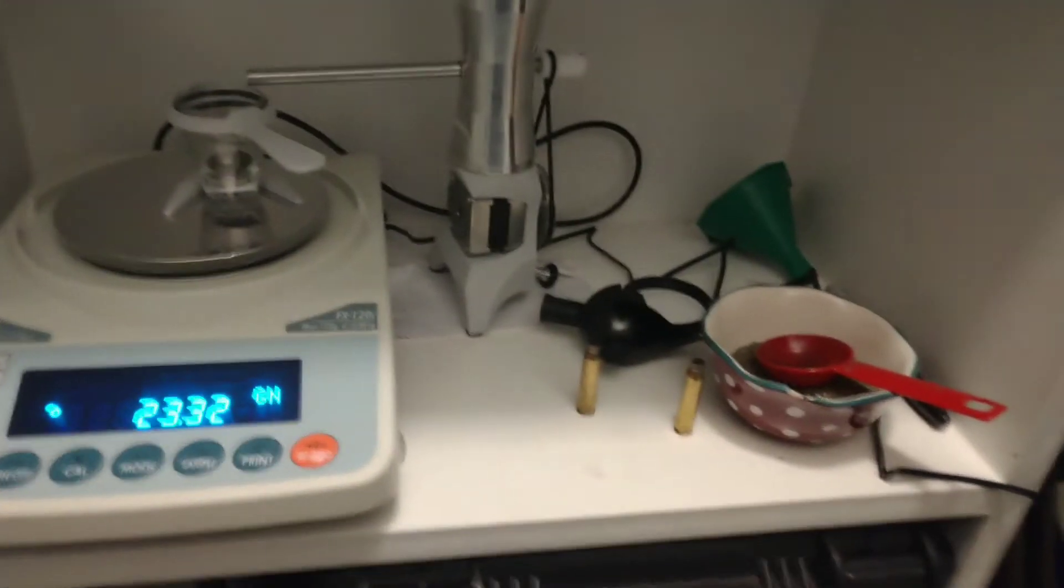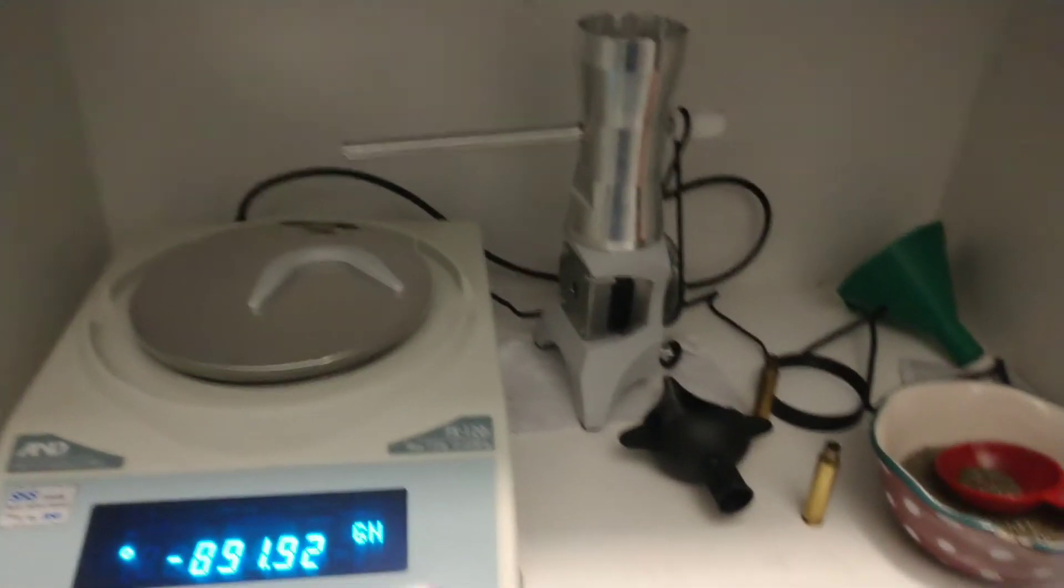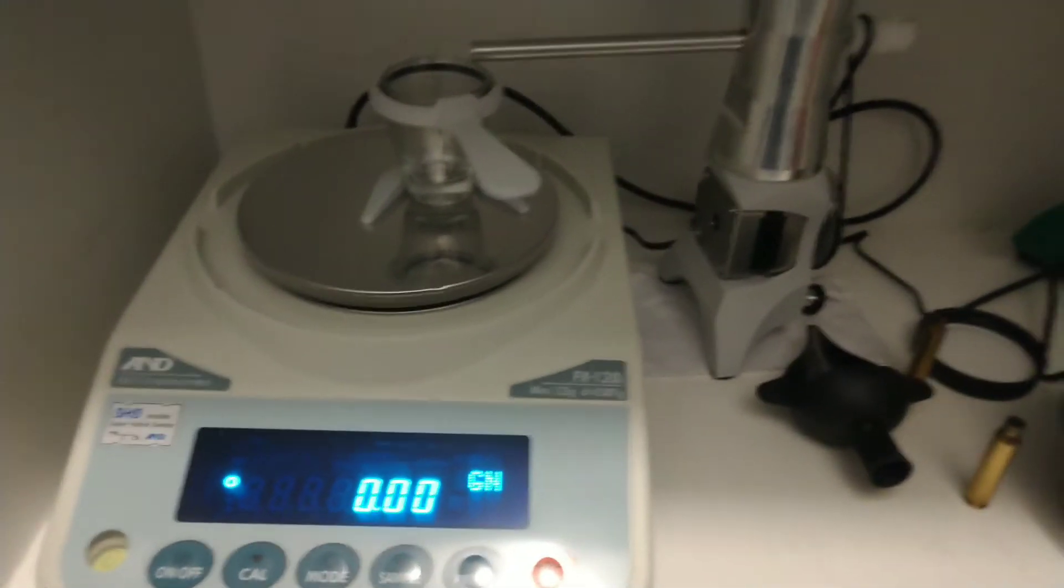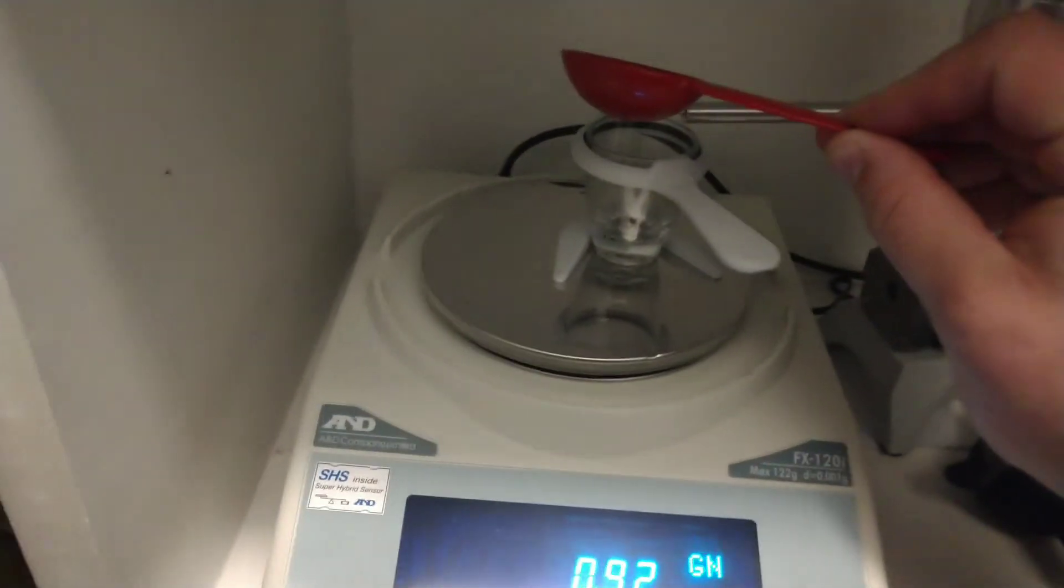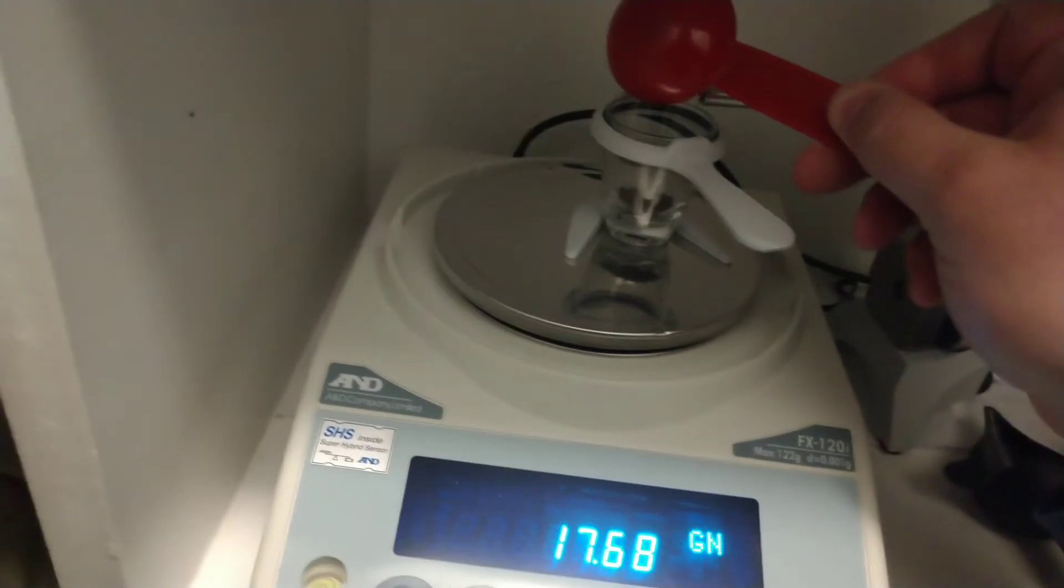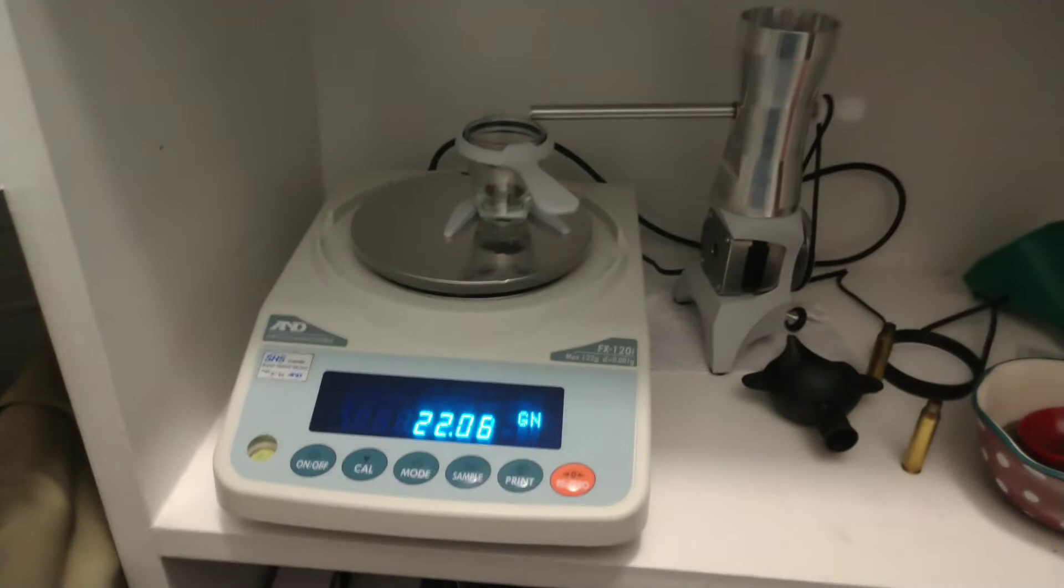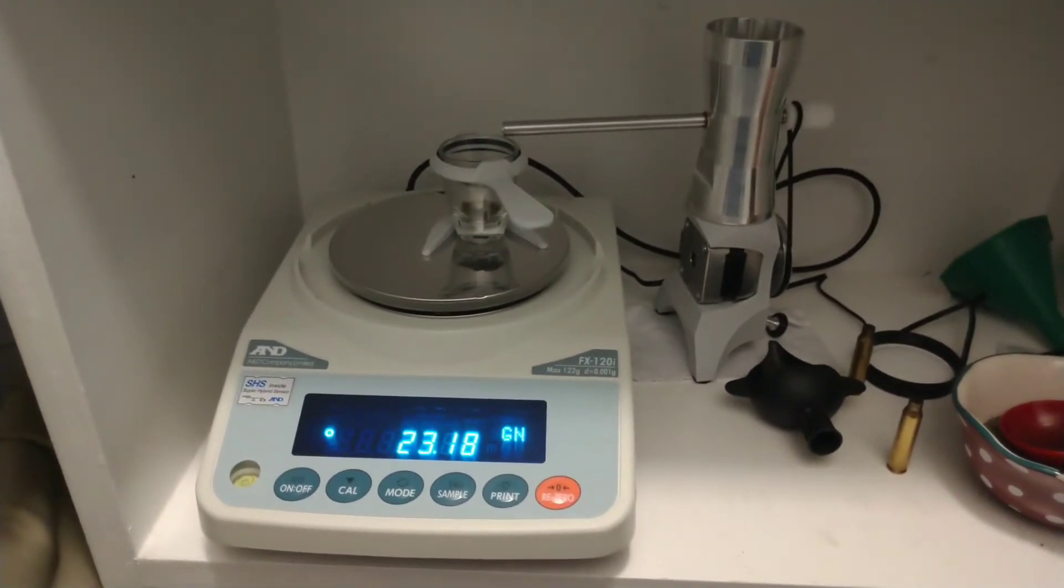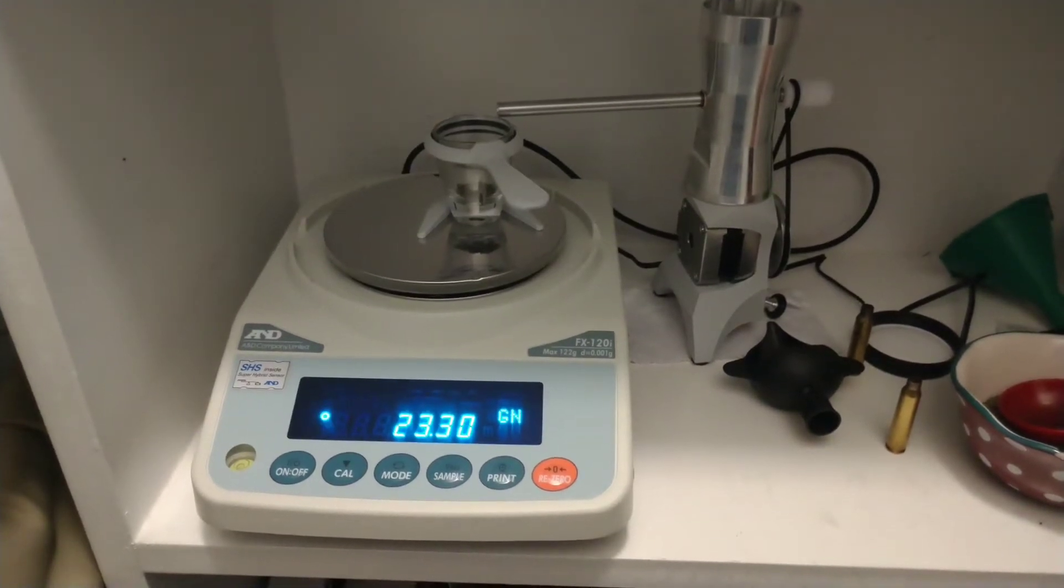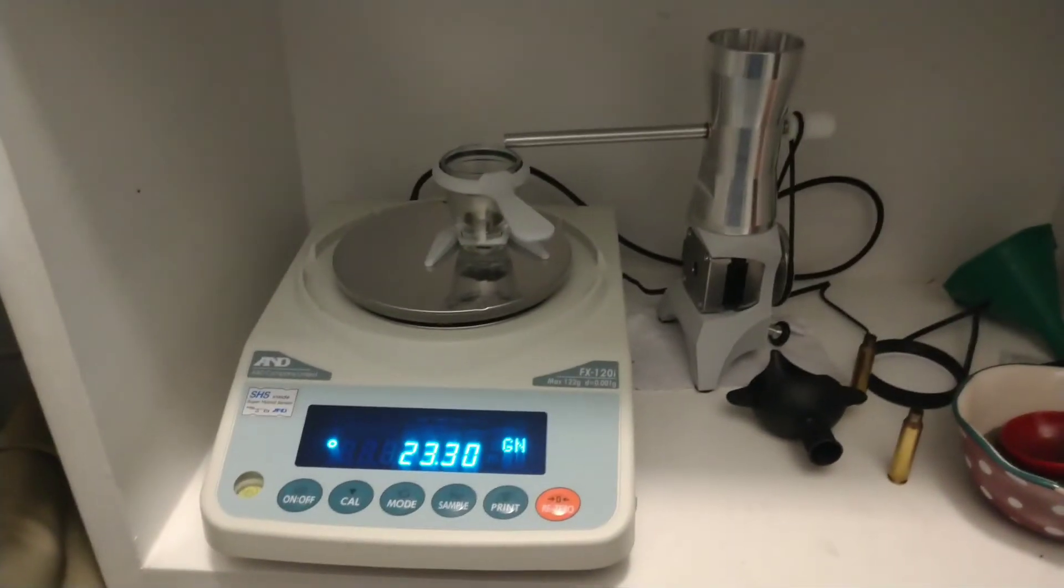I'm going to load this into here. Okay, so I got all that loaded up. We're going to do one more. I'll let it trickle up. Okay, 23.3. I'm going to put it in the second brass piece. We're going to go check it out there at the other scale.